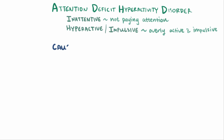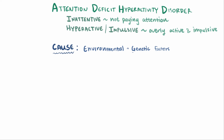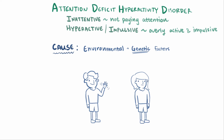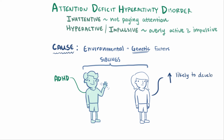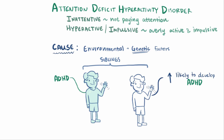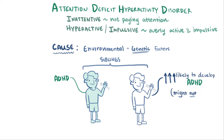What causes someone to be hyperactive, impulsive, or inattentive? It's pretty complicated, and we don't really know — probably a lot of different factors — and ultimately they all fall into some combination of environmental and genetic factors. One interesting clue to a genetic component of ADHD is looking at families. A child with a sibling that's been diagnosed with ADHD is more likely to develop it themselves. Furthermore, if those siblings are identical twins, meaning they have the same DNA, their chances of developing ADHD is considerably higher. Having identical DNA doesn't mean the twin is definitely going to develop ADHD, which again suggests that both genetic and environmental factors play a part.